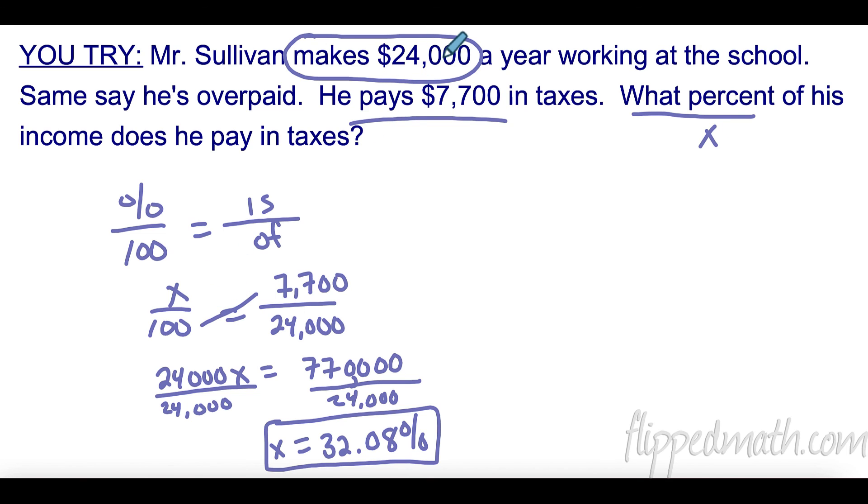I set up percent over 100. It was pretty easy to know I was looking for the percent, so that's my variable. Then I figured out which was the 'is' and which was the 'of.' The whole amount I made was $24,000 - that goes on the bottom. The part, $7,700, goes on top. I cross multiplied, divided, and found that 32.08% of my money was being paid in taxes. That's a lot of money, but it does good things for a lot of good people.